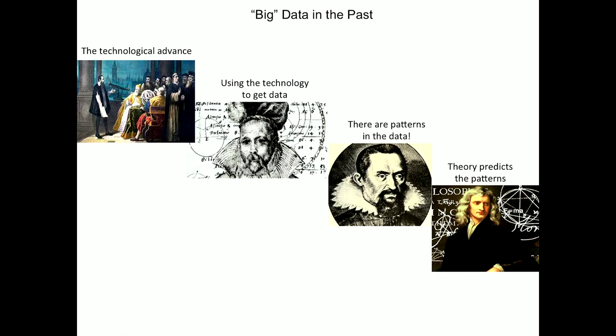The telescope allowed Tycho Brahe to accumulate lots and lots of data. He didn't know what to do with it, but he filled notebooks with data on the locations of the planets over a long period of time. Johannes Kepler took Brahe's data and saw patterns — didn't know how to explain them, but was able to see that there were patterns in the solar system. And then Newton, of course, explained the patterns with his theory of gravity.